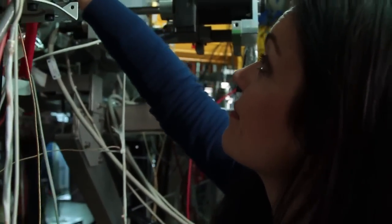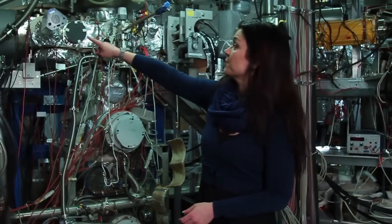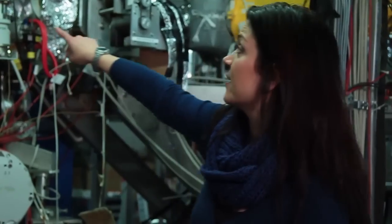So how are we going to produce gluons? Here you see a proton target, and now antiprotons will come from the left side, and they will collide with protons. Now, where antimatter touches matter, everything is converted into energy, and out of this energy, we will also produce gluons.